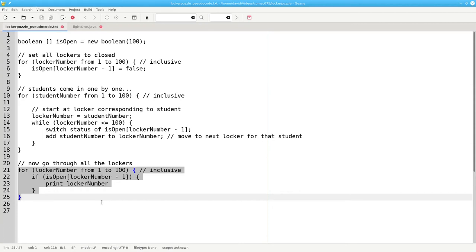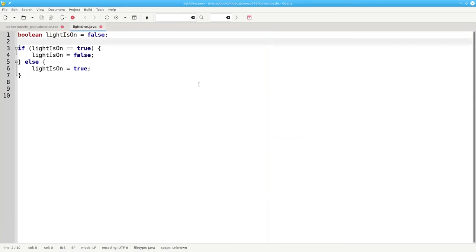The other question we have is, how do we switch a boolean variable representing our locker from open to closed and back again? Here's a similar example to give you some ideas. Let's say we have a boolean called lightIsOn that's either true for on or false for off. Here's one way that we can do it. We can say if lightIsOn equals true, then we'll set it to false. Otherwise, it must be false and we'll set it to true.